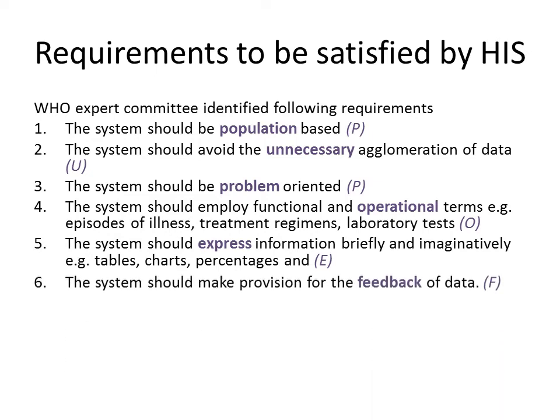The system should also make provision for feedback — those who generate and analyze the data should also receive feedback of the final analysis and intelligence generated. For example, information about an increase in lifestyle diseases and the probable reason being a new diet introduced in the village should reach the grassroots level too, so that those people know the local problems and can take action at the local level. A system of feedback from higher levels to the lowest level is an important part of health information system.